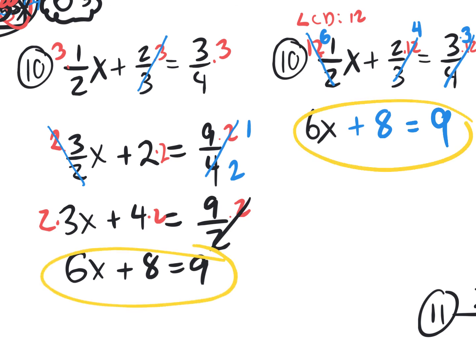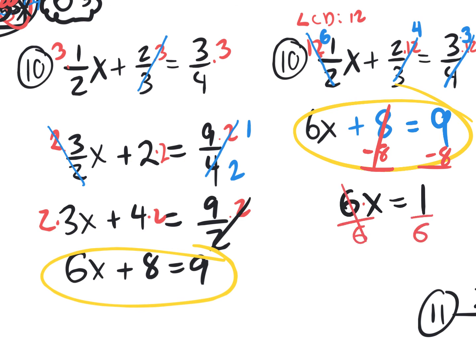It's the same equation, just done a lot faster — we got rid of all fractions at the same time. Subtract 8, subtract 8, the 8s disappear, giving 6x equaling 9 minus 8 which is 1. The final step: get rid of that multiplication of 6 by dividing by 6, dividing by 6. So x equals 1 sixth. There's your answer for that one.